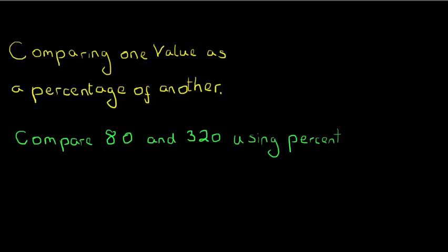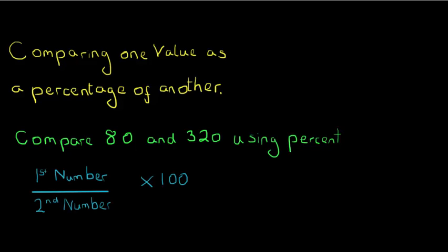Let's take the first example where we are asked to compare the number 80 and the number 320 using percent. I'm going to introduce the idea of a formula: I'm going to start by comparing the two numbers by way of a fraction and then convert that fraction to a percent by multiplying by 100. In other words, I'm going to take the first number, put it over the second number, and multiply by 100.